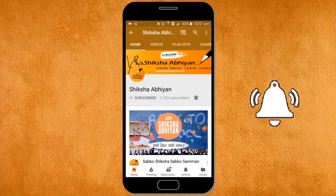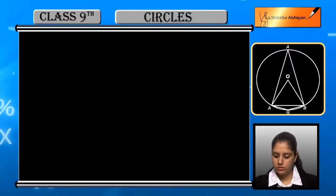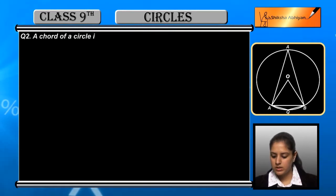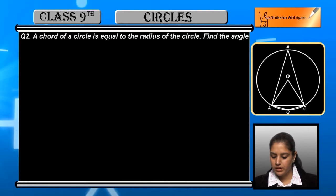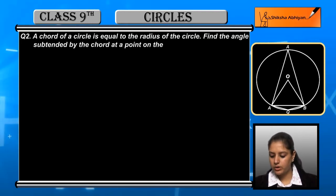Question number 2: A chord of a circle is equal to the radius of the circle. Chord and radius are equal. Find the angle subtended by the chord at a point on the minor arc and also at a point on the major arc.